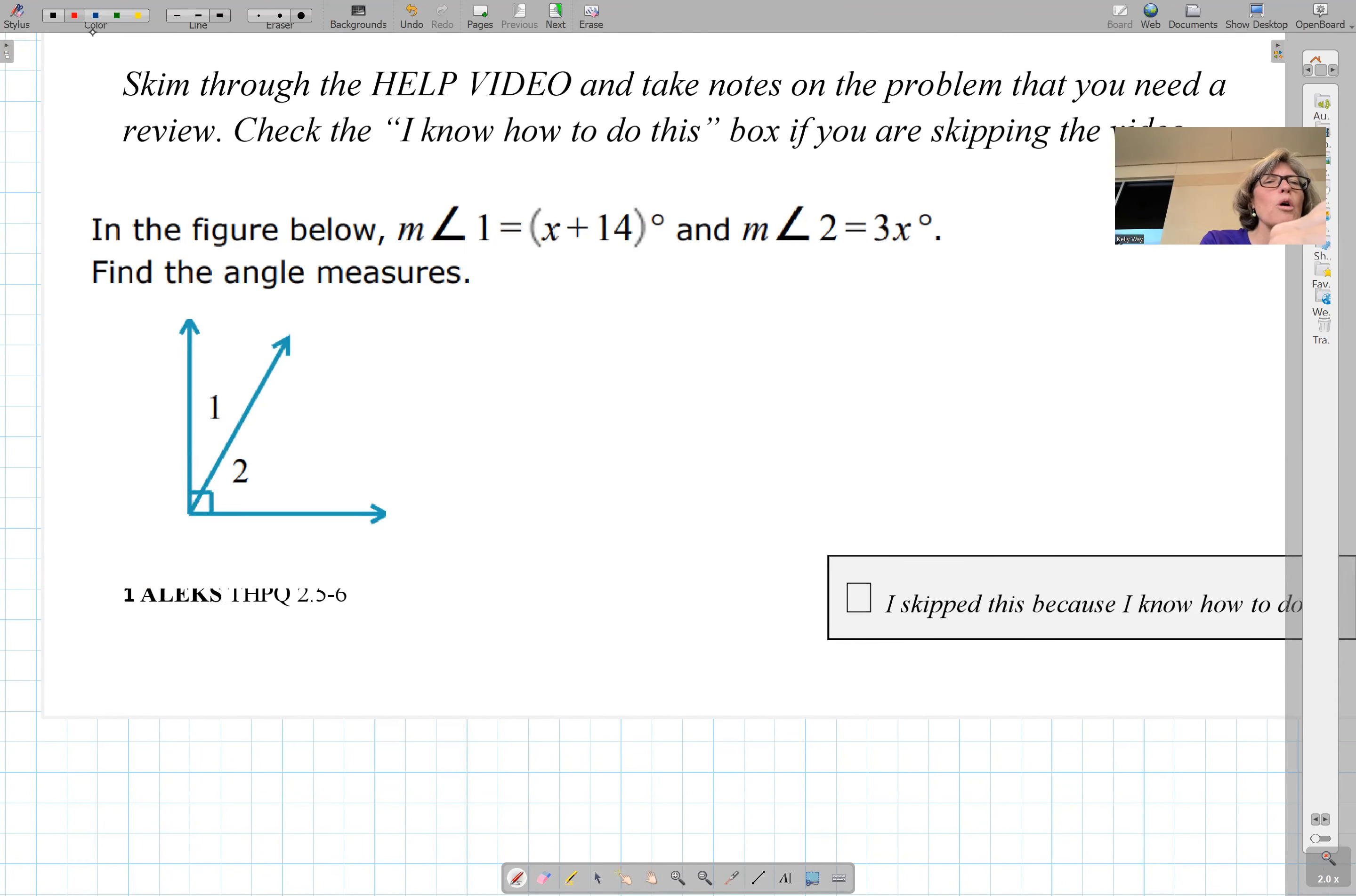It says in the figure below, measure angle 1 is x plus 14, and measure angle 2 is 3x. And what you need to notice is there's a 90 degree here. So our equation, the things before algebra, is that angle plus angle equals 90 degrees.